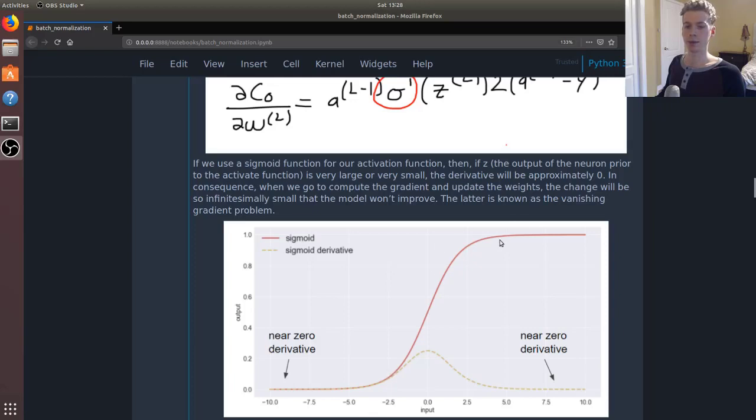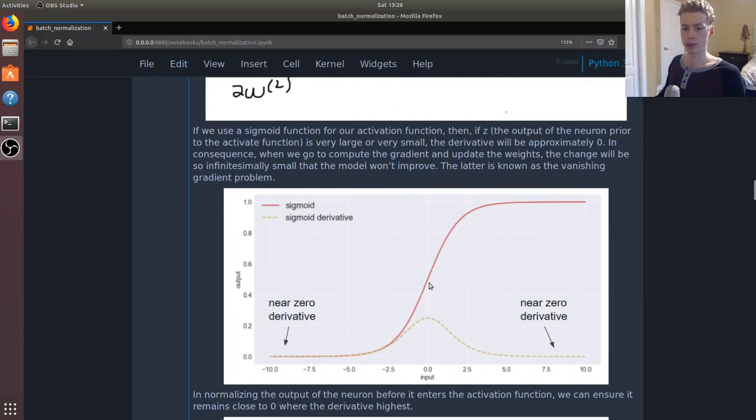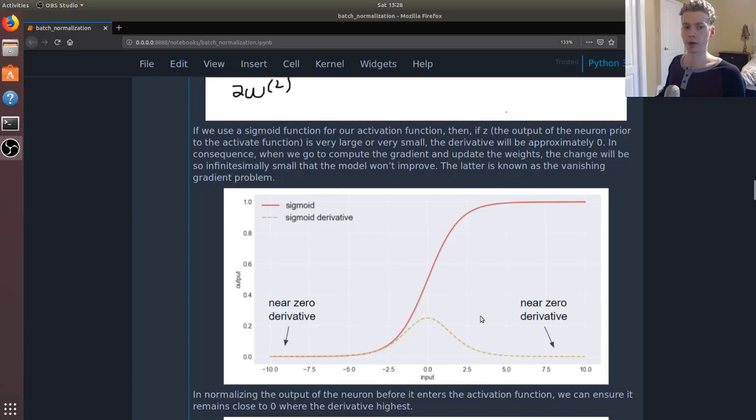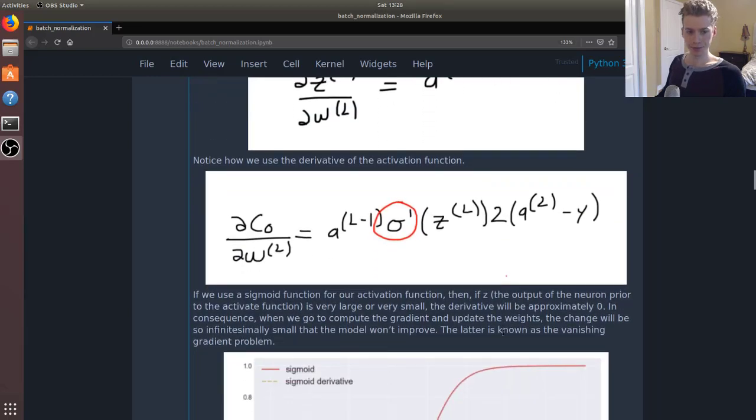There's this ideal range close to zero which we get non-zero values for the derivative. This is important because if the derivative of the activation function is zero, well then this whole thing is zero.